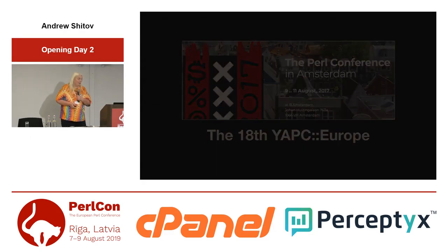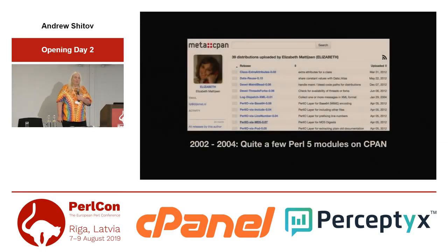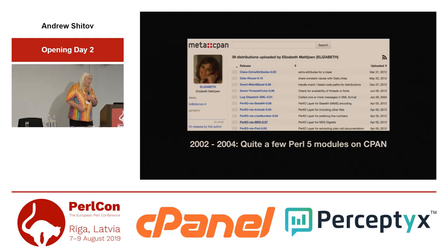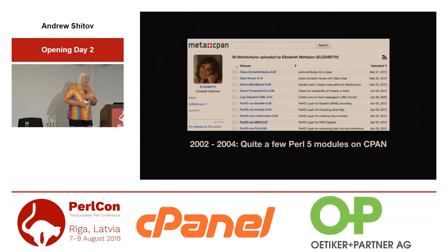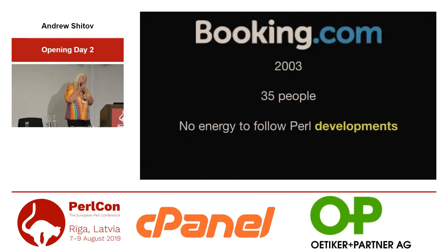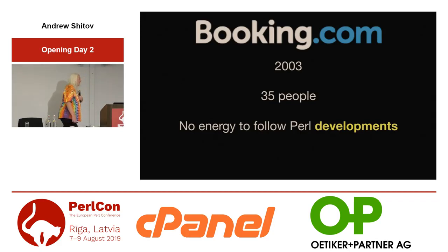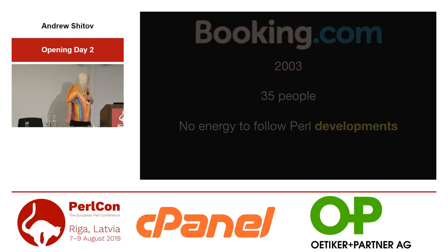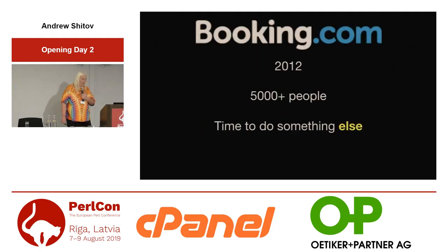Meanwhile, in the early 2000s, I did a lot of modules on CPAN, specifically about IO layers and threads. Then in 2003, I started doing work for Booking.com at the time when they had 35 people. I stayed there for about nine years until there were about 5,000 people in the company, and then I decided to do something else.